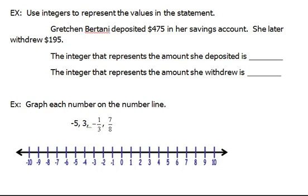Alright, in this example it says Gretchen deposited $475 in her savings account. She later withdrew $195.